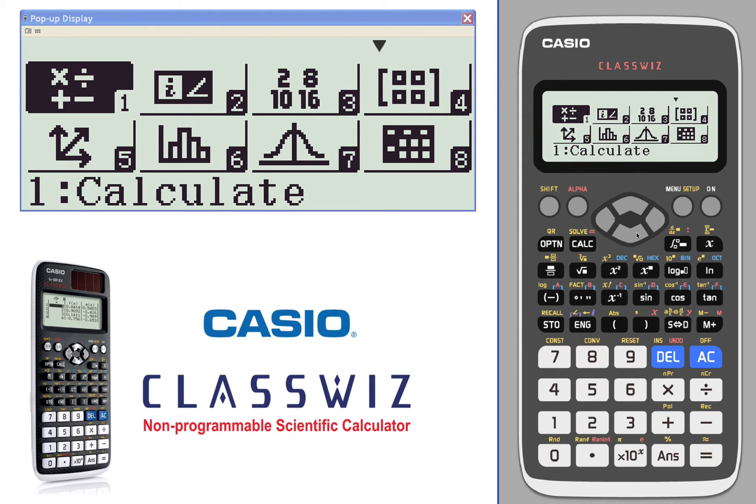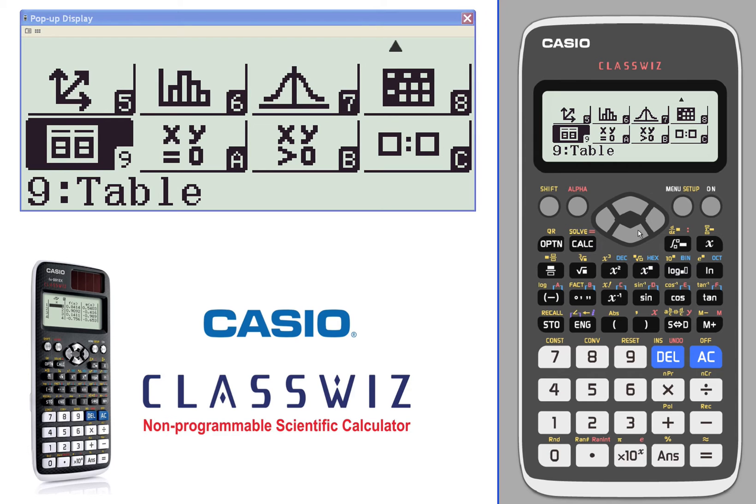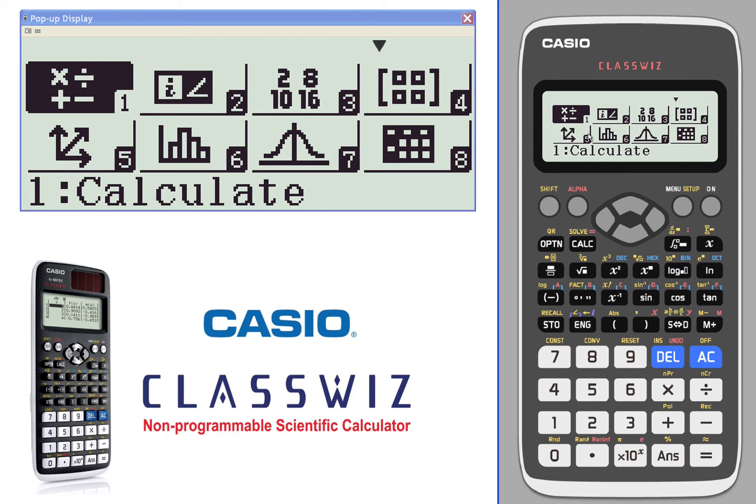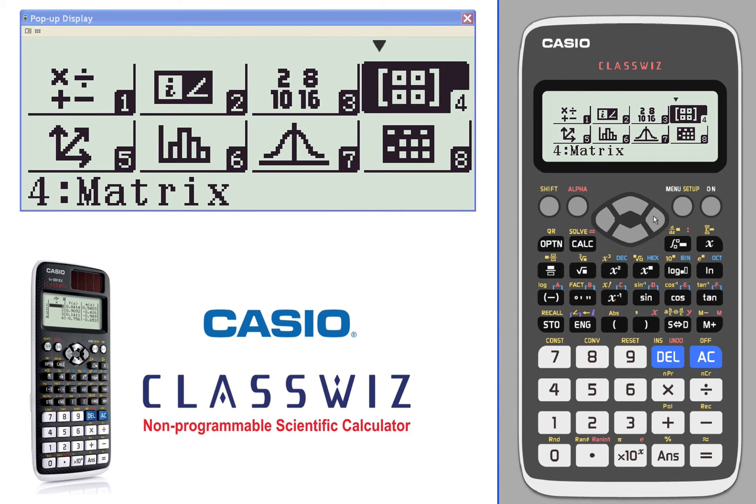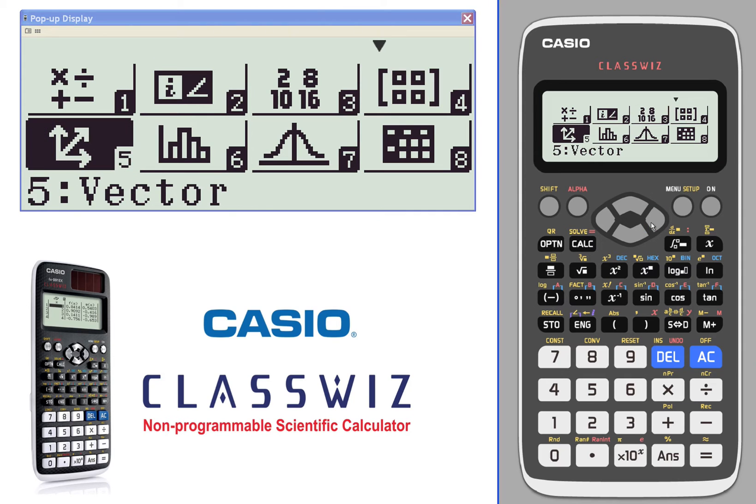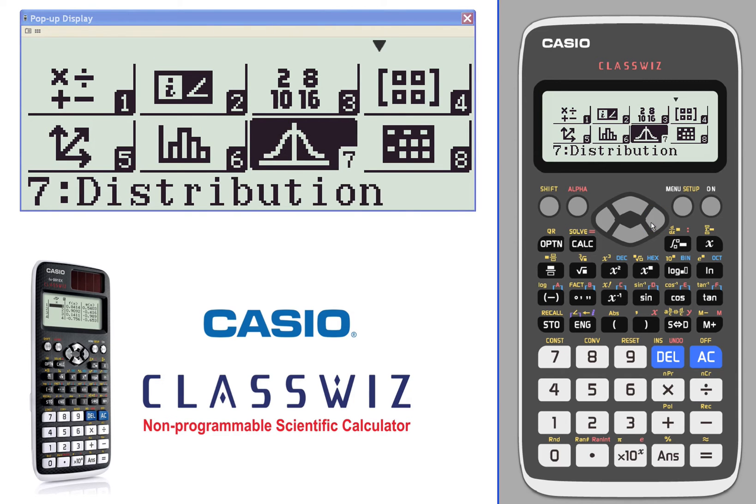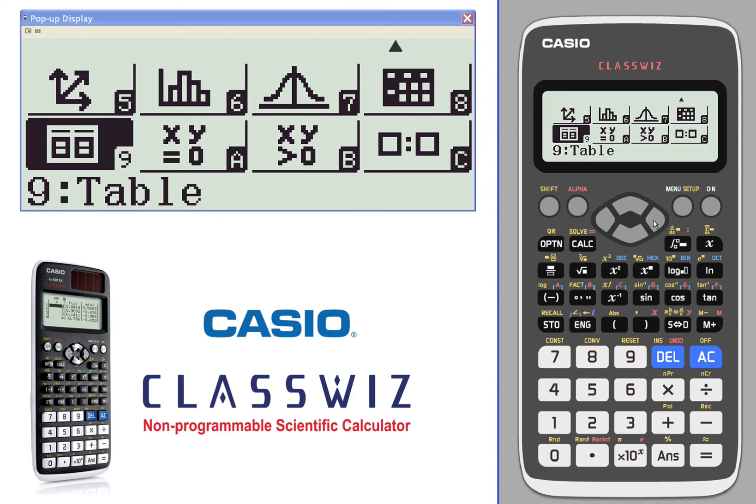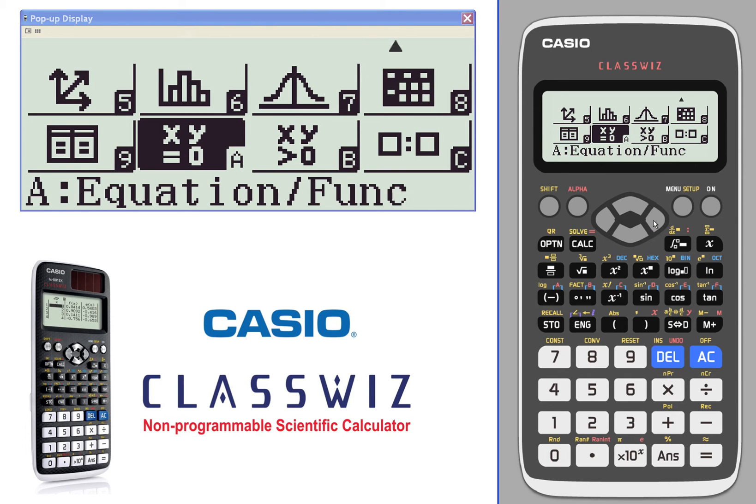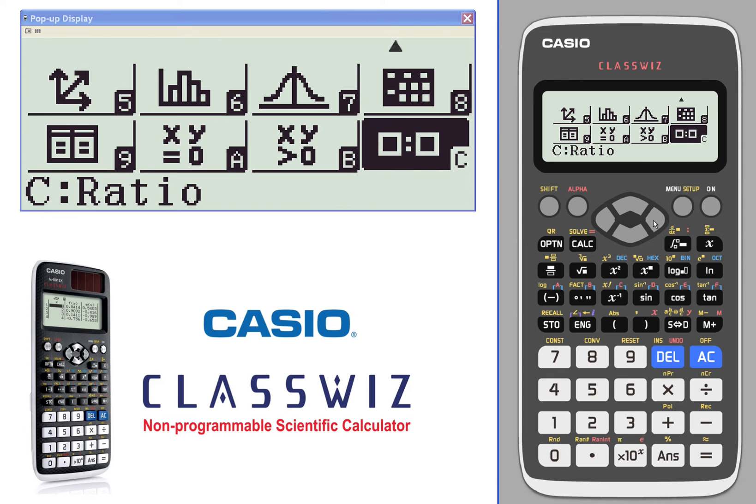So we have icons. You can click down and see what icons are available. Let me tell you what they are. Your calculate, complex calculations, base-n calculations, matrix calculations, vectors, statistics, distributions, spreadsheets for the first time, tables, equations and functions, inequalities and ratios.